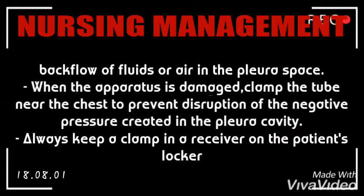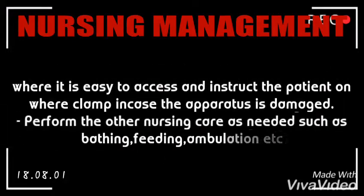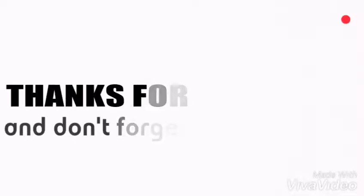When the apparatus is damaged, clamp the tube near the chest to prevent disruption of the negative pressure created in the pleural cavity. Always keep a clamp in a receiver on the patient's locker where it is easy to access, and instruct the patient on where to clamp in case the apparatus is damaged. Perform other nursing care as needed, such as bathing, feeding, and ambulation.